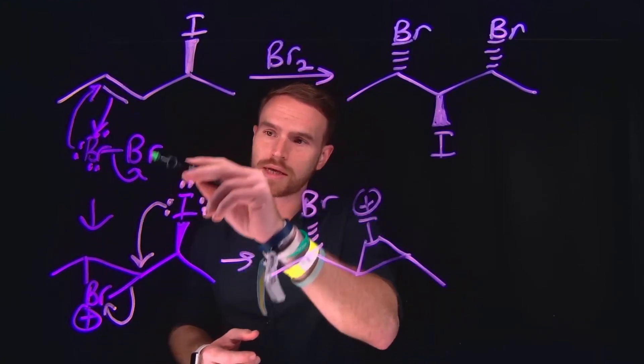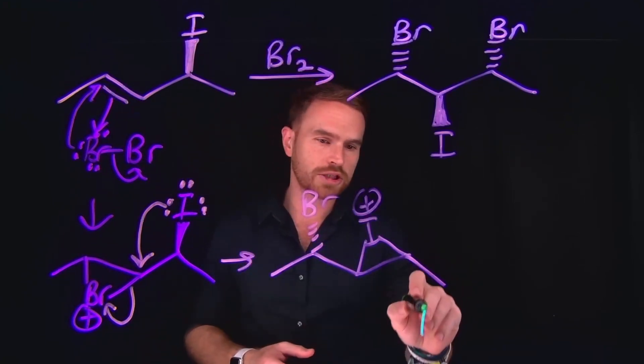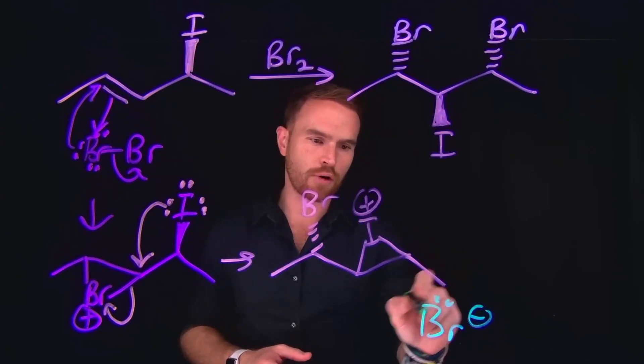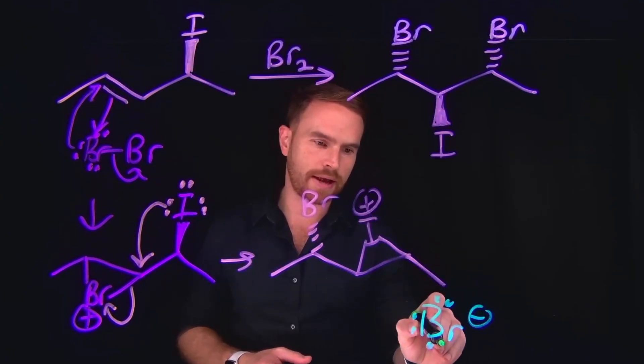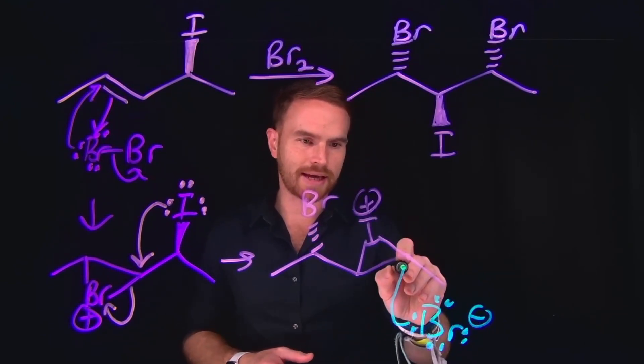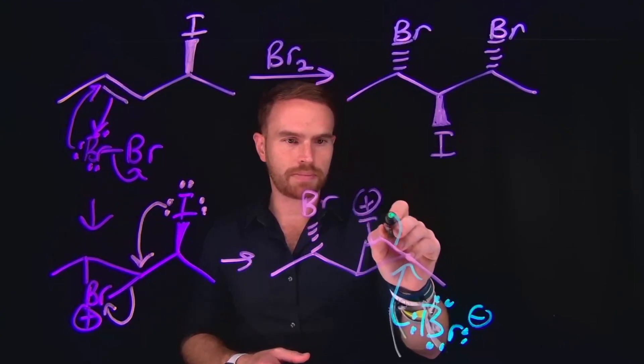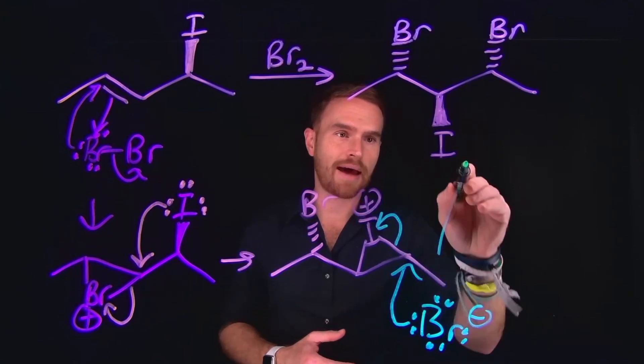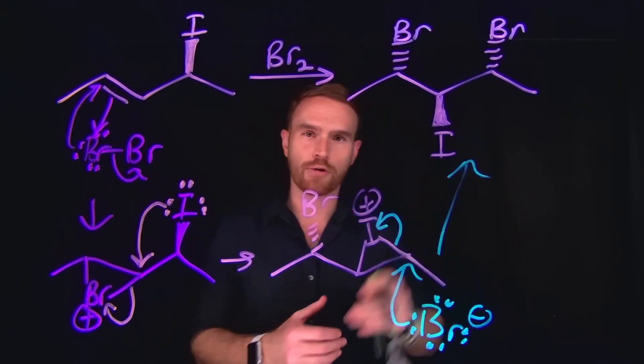And now from here, remember we lost a bromide ion, which can come in and attack to open up this ring. So remember this bromide ion now has four pairs of lone pairs of electrons, which can come in and attack at this position, which will kick up these electrons and leave us behind with our final product. So once this happens, this actually generates our final product.